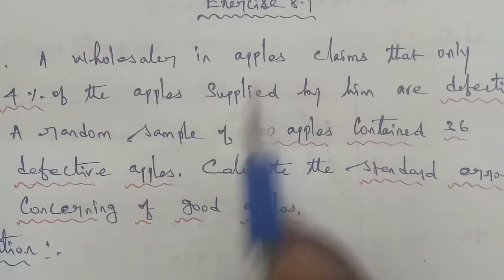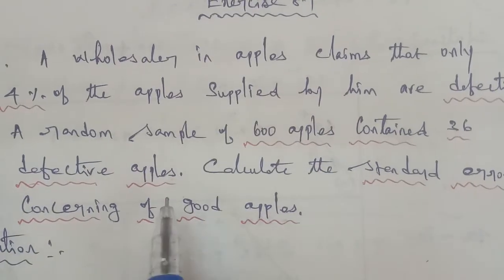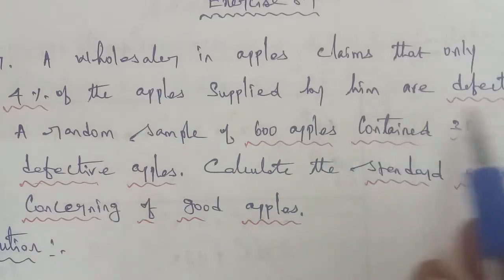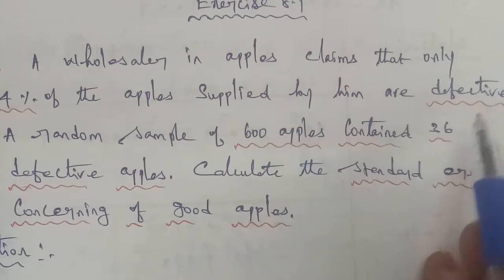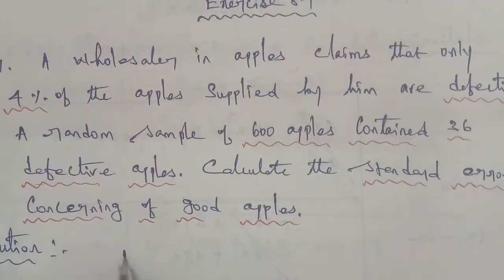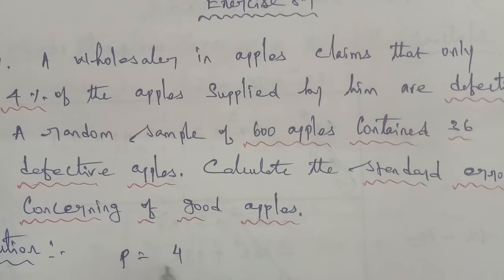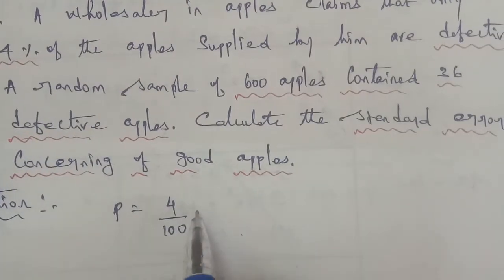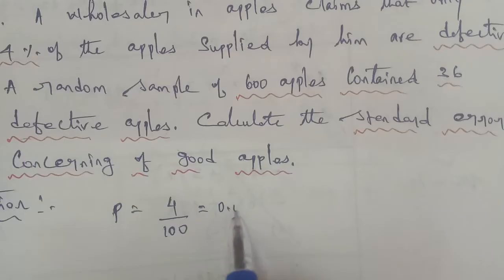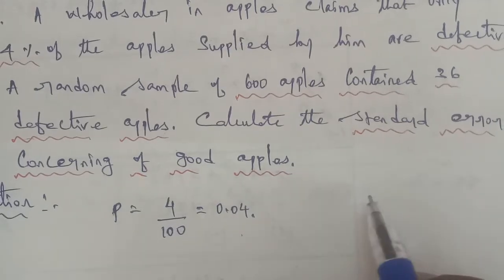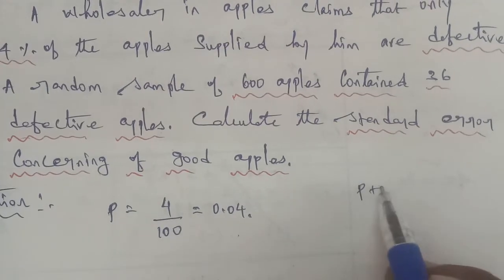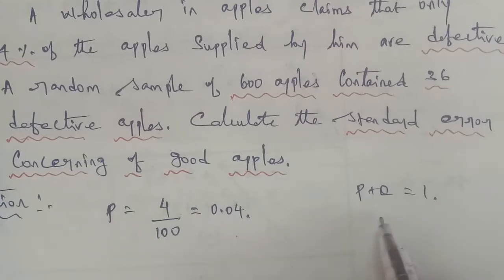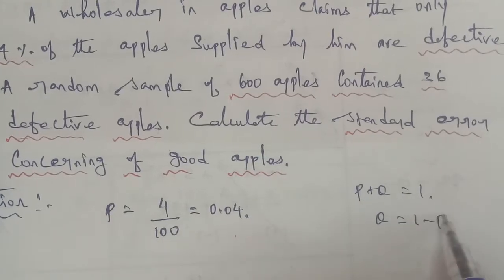Given information: 4% of appeals are defective. Therefore, P is equal to 4 by 100, which gives us 0.04. Next, we use the result that P plus Q is equal to 1, so Q is equal to 1 minus P.